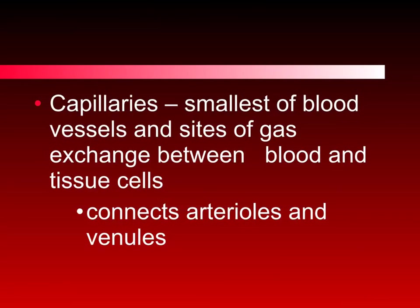The majority of arteries, except for the pulmonary arteries, carry highly oxygenated blood. Gas exchange occurs in the capillaries, where oxygen leaves the capillaries into the body tissue. At the same time, the body tissue has a high concentration of carbon dioxide, which moves into the capillaries. The blood, now low in oxygen, changes color to blue. By the time it leaves the capillaries and gets into the venules, it's low in oxygen and needs to return to the heart.